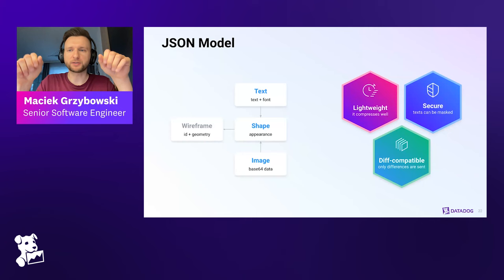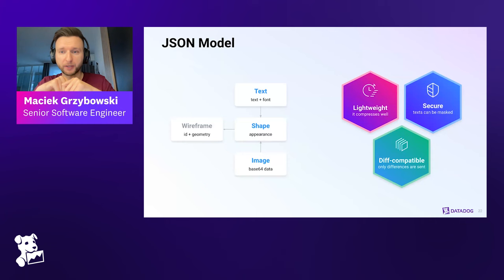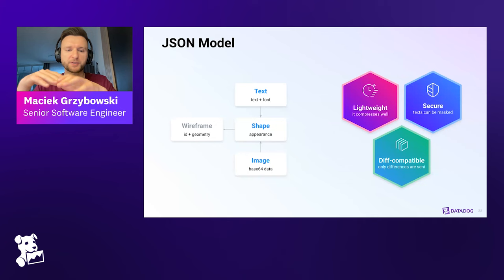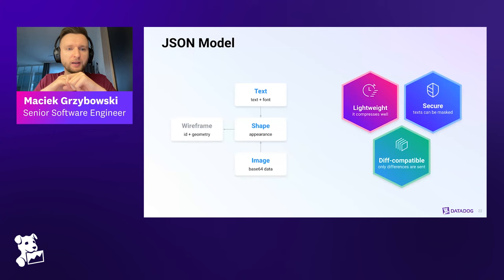Every 100 milliseconds on iOS, our recorder traverses the view hierarchy of the mobile app, starting from the root window object and visiting all children, spotting significant views and producing wireframes for them. Then we jump to a background thread for additional processing and optimization before sending data to our servers. The JSON model brings a lot of efficiency: it's very light and compresses well, even with base64-encoded images. It's also secure — since we read all text from buttons, labels, and navigation bars, we can erase sensitive information and allow customers to mask every text. And it's diff-compatible, meaning when something changes — like a button being pressed — we only send the update for that wireframe's ID, not the entire wireframe again.